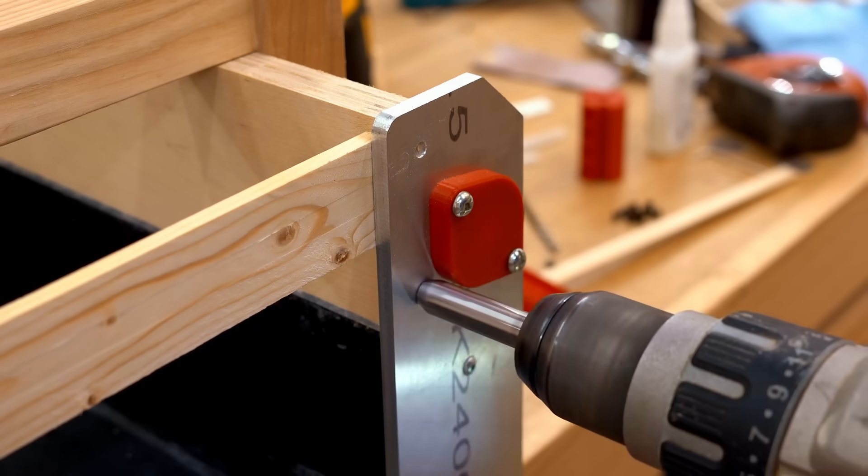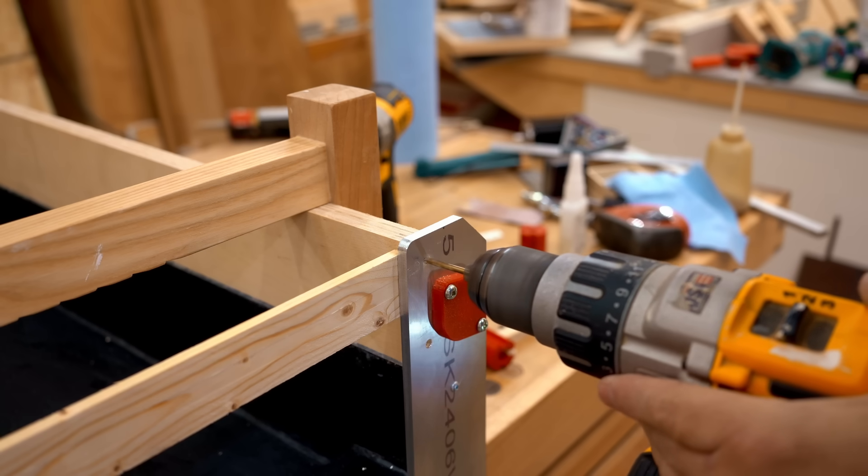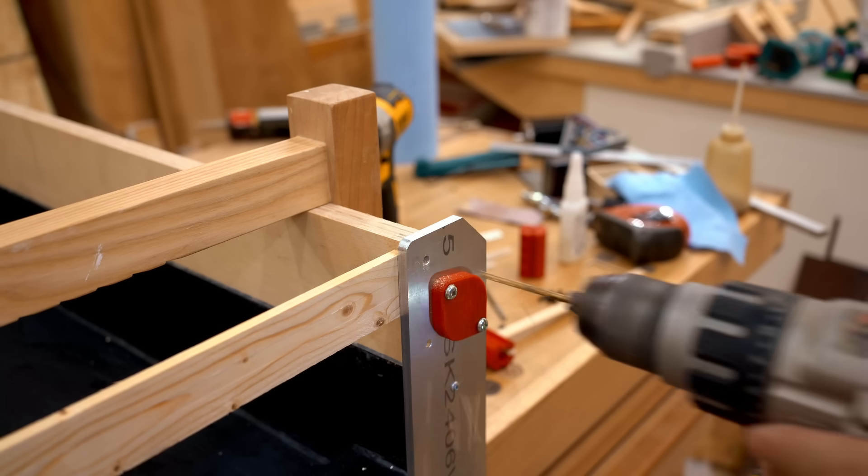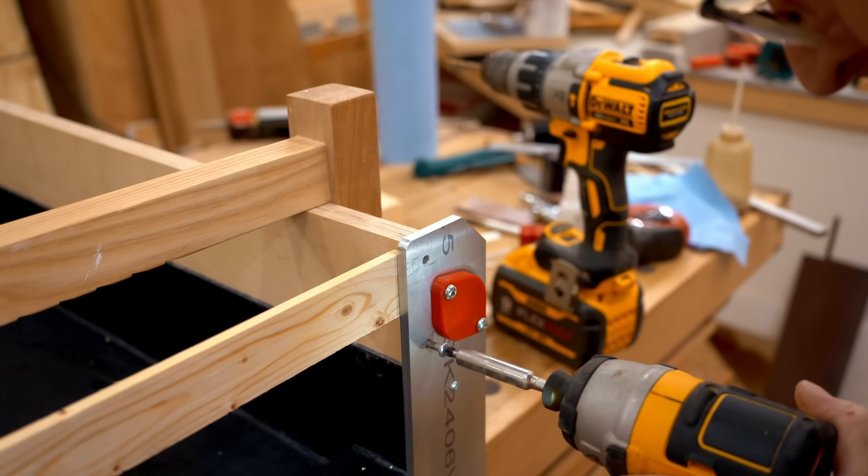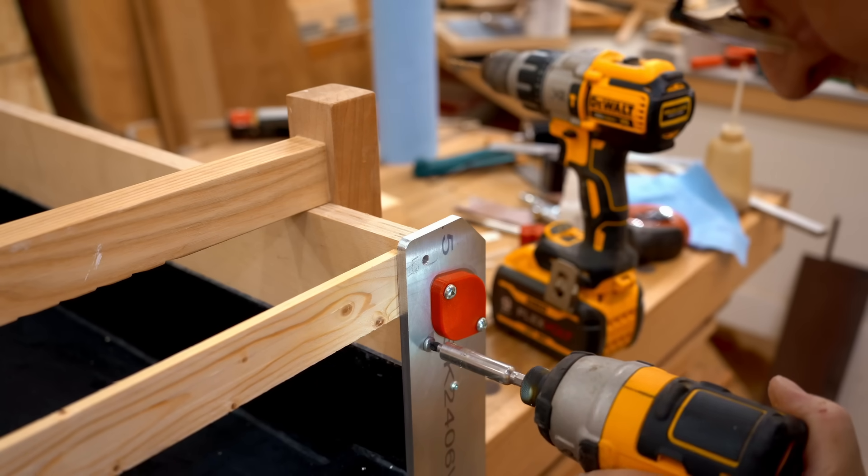Then I can carefully drill and drive screws through those aluminum plates and into the side extensions, once again using my homemade VIX bit to center the holes. If you haven't seen that video where I made that bit, that's one of the metalworking projects that I talked about in video number one.